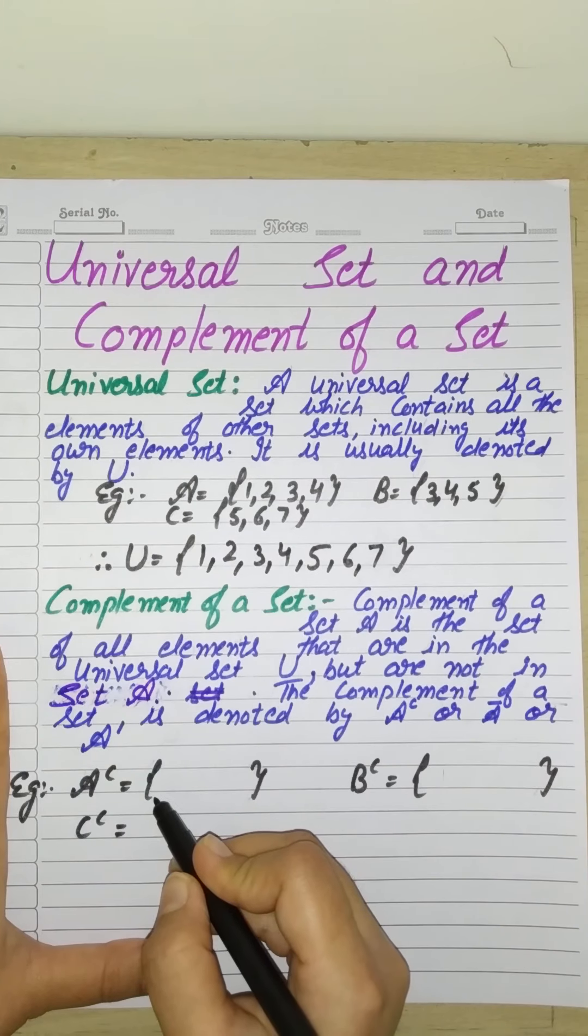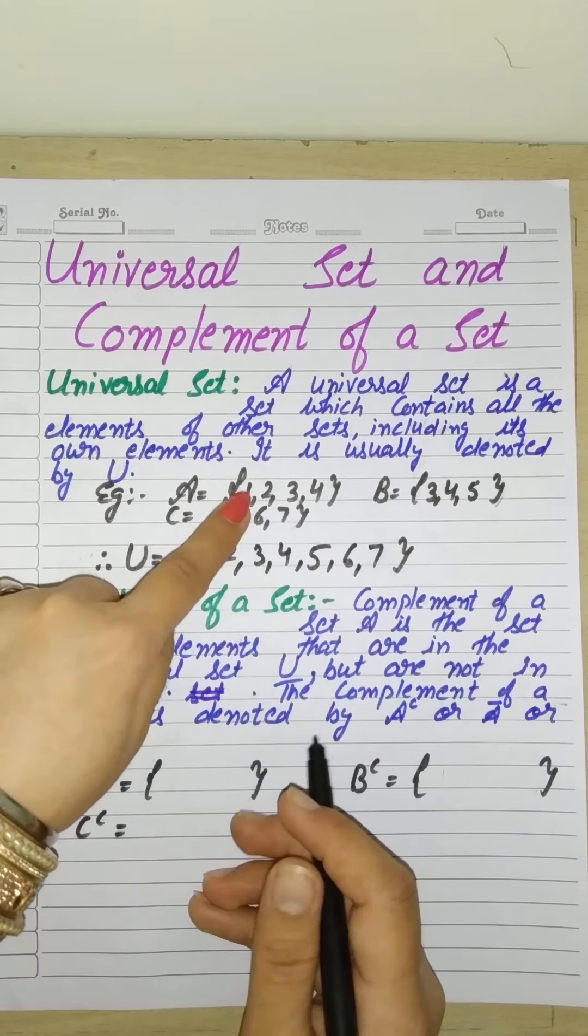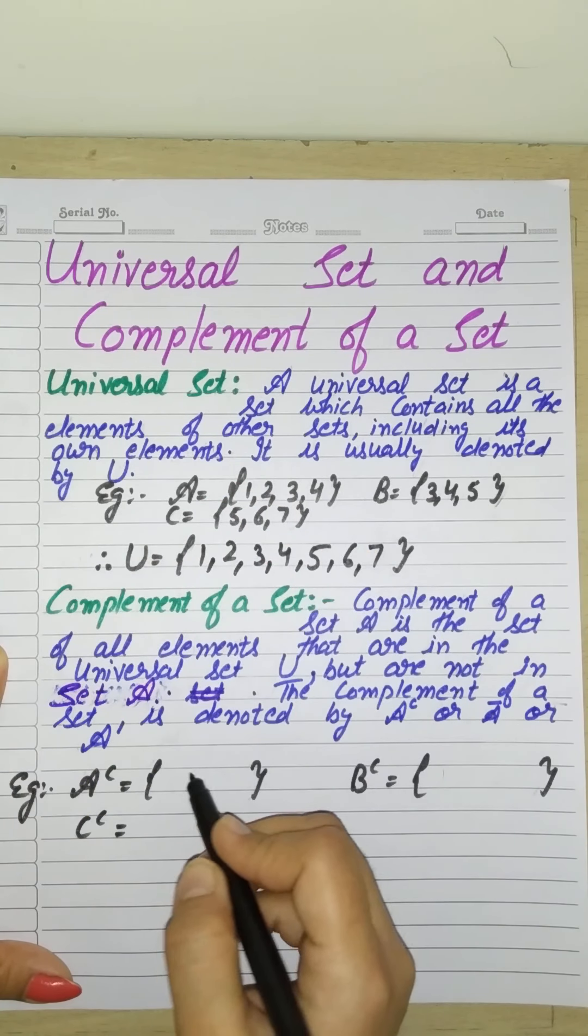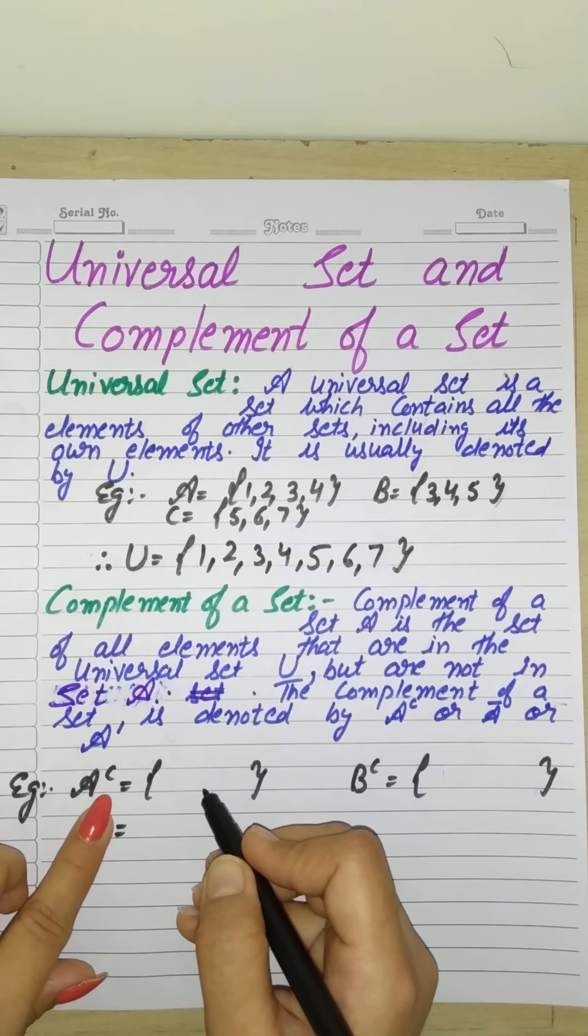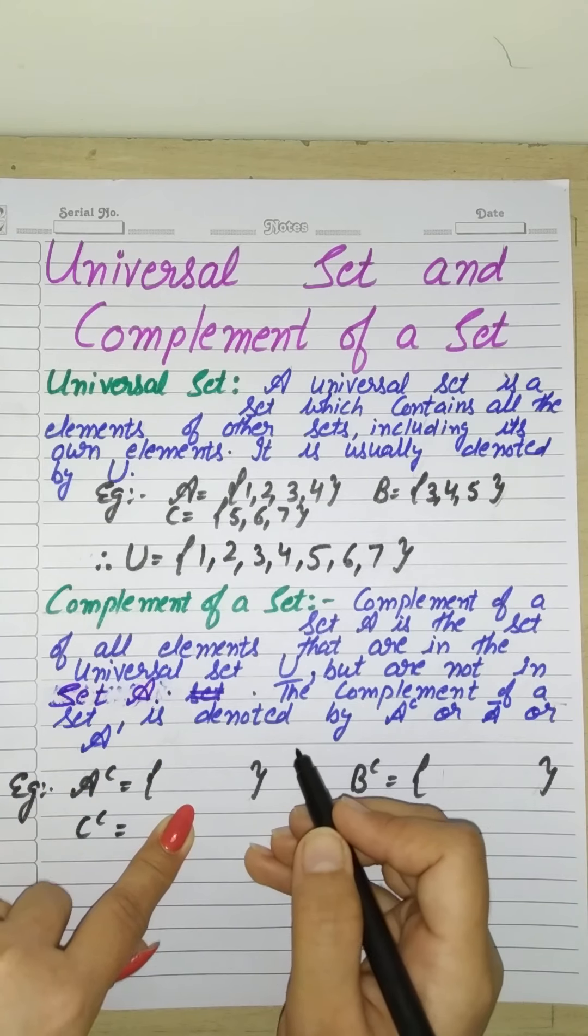Now, to understand with an example, let's see. You have to find A's complement. I have taken A, B, C, and universal set. We have to find A's complement. The complement excludes what's in A and includes what's in the universal set. What is in A? 1, 2, 3, 4.